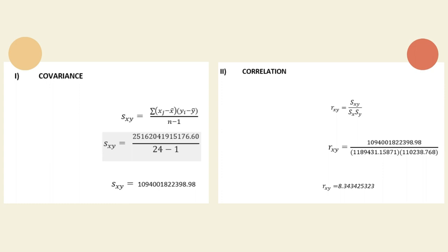Next is correlation. The formula is the covariance Sxy divided by Sx times Sy. Enter the covariance and divide it by the product of the standard deviations for domestic and international. Therefore, the correlation answer is 0.8343425323.